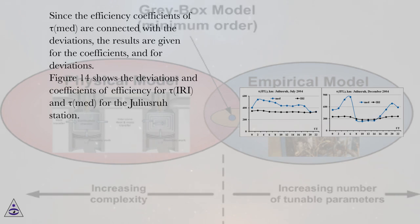Since the efficiency coefficients of tau MED are connected with the deviations, the results are given for the coefficients and for deviations. Figure 14 shows the deviations and coefficients of efficiency for tau IRI and tau MED for the Julius Rue station.